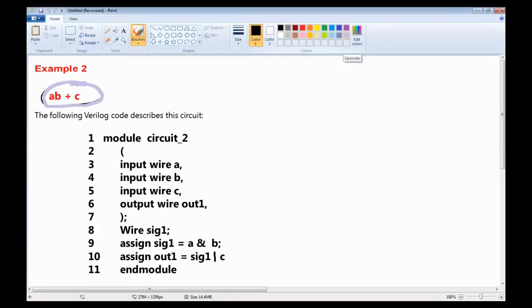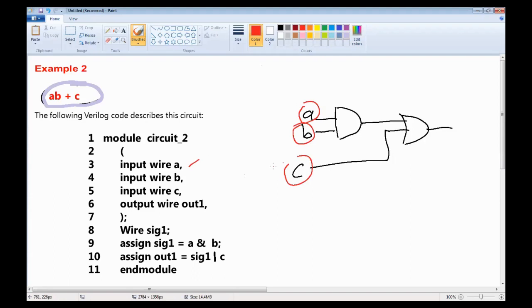Here we have another example, the expression A·B + C. The circuit is as follows: A, B, C. In the description, we have input wire A, input wire B, input wire C, and output wire out1. Wire signal 1 is defined here.